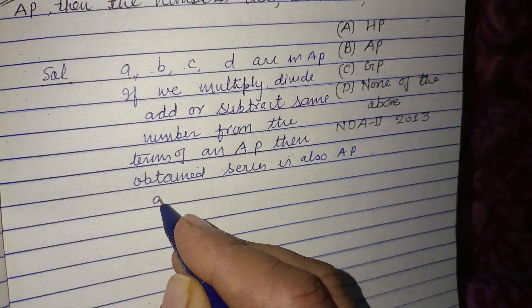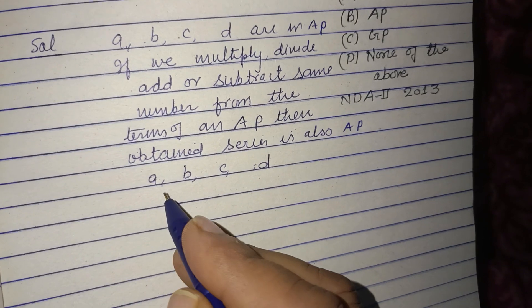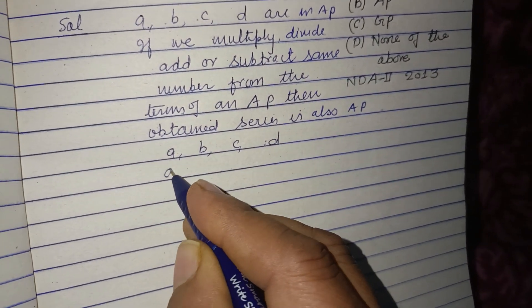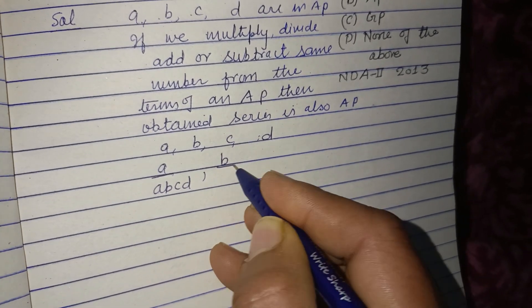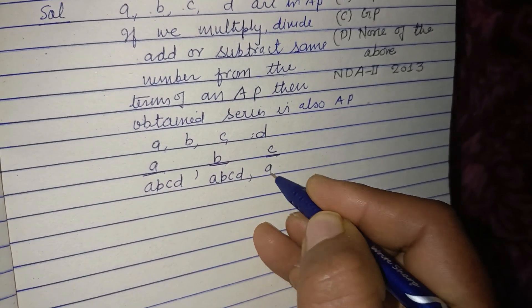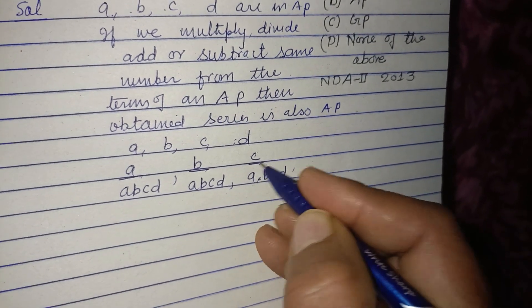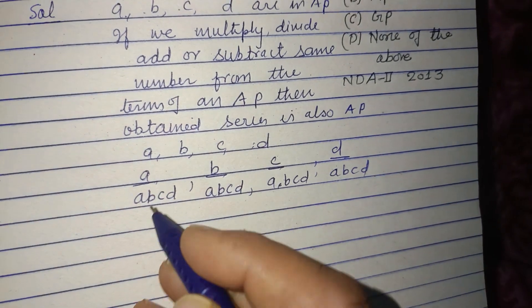So here A, B, C, and D are terms. Now we divide each term by ABCD. So A upon ABCD, B upon ABCD, C upon ABCD, and D upon ABCD.